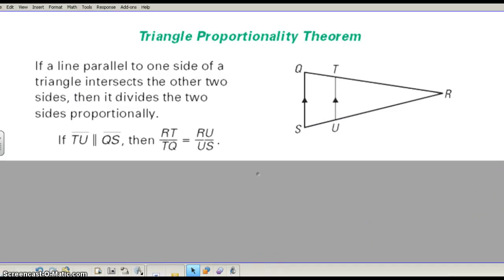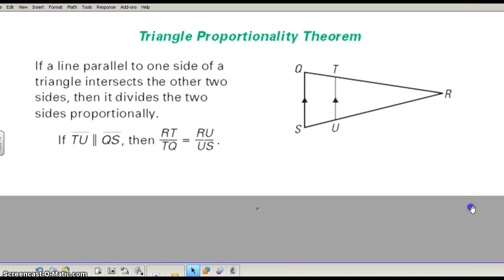So as I said, this is a triangle proportionality theorem. And it says that if you have a line parallel to one side of a triangle, intersects the other two sides and divides those sides proportionally. So copy that down and let's get ready for an example.